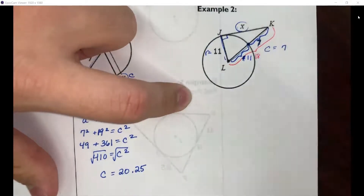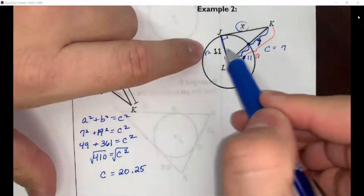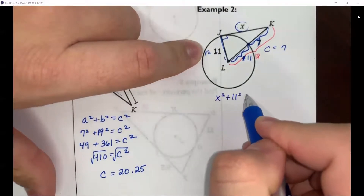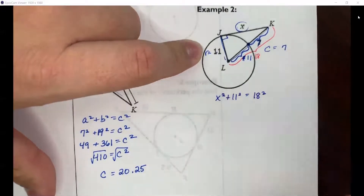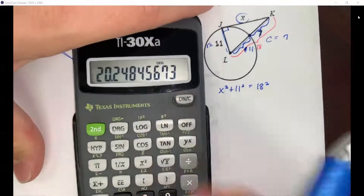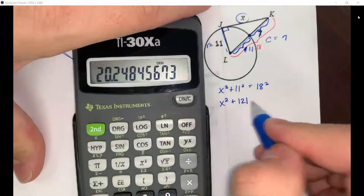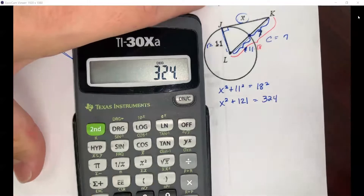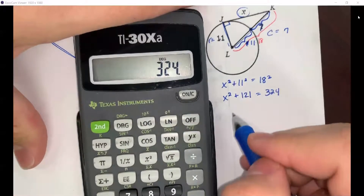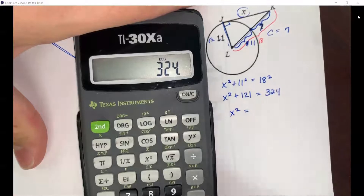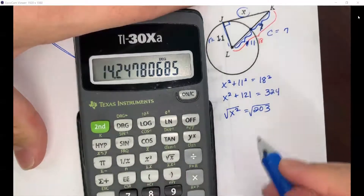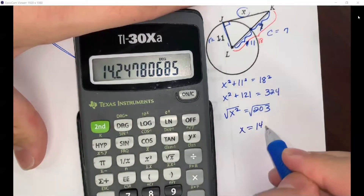Now we have the right triangle to work with. A² + B² = C², so X² + 11² = 18². That gives X² + 121 = 324. Subtracting 121 from both sides: X² = 203. Taking the square root, X equals approximately 14.25.